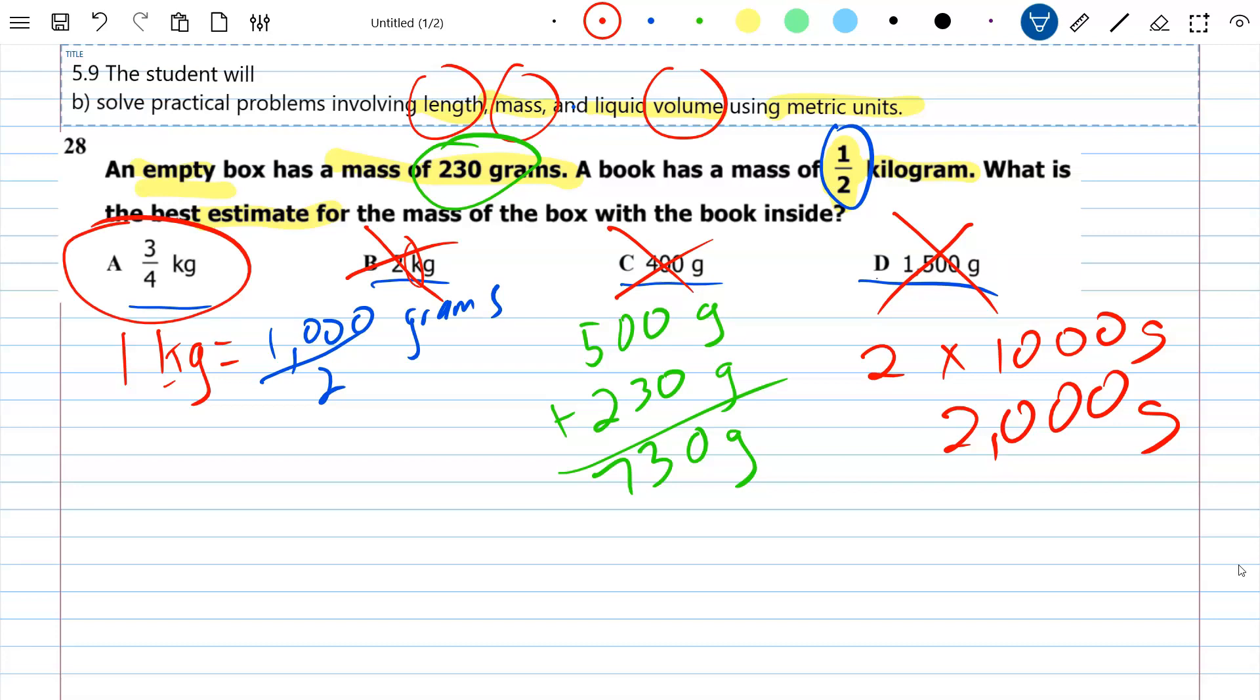So what does three-fourths mean here? It means I need three-fourths of 1,000 grams because that's what one kilogram equals. And if you had remembered that three-fourths equals 75 hundredths, you could have done 75 hundredths times 1,000 with your calculator. And that would have given you 750 grams.